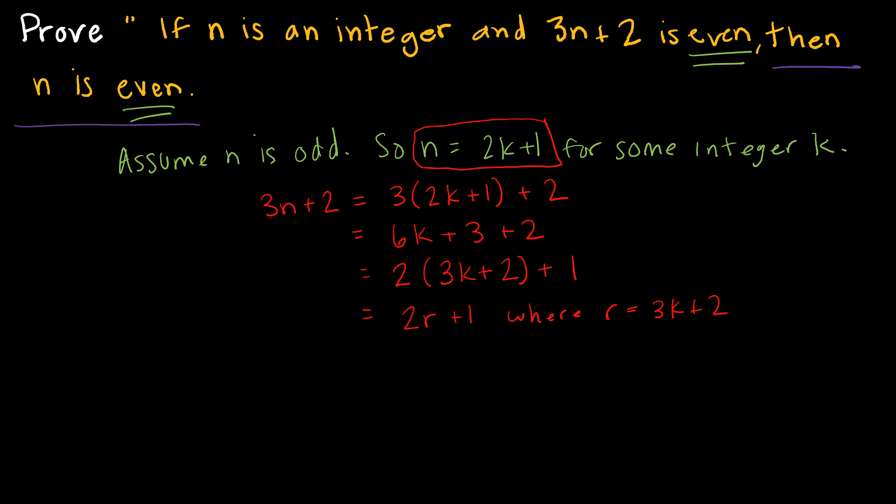And what does this tell me? Well, this shows that 3N plus 2 is odd, because that is the definition of an odd, 2 times some integer plus 1.